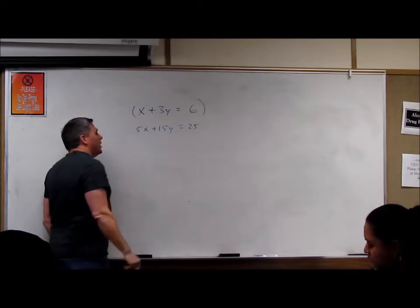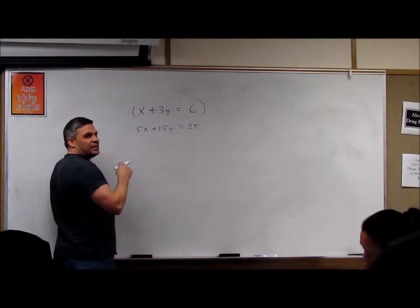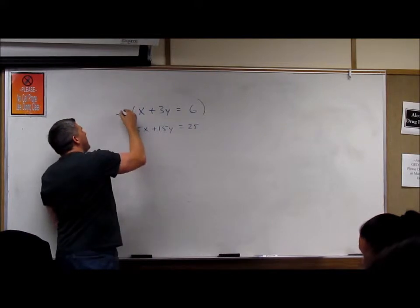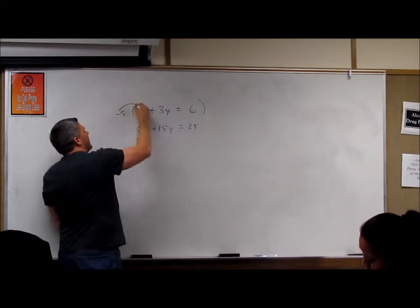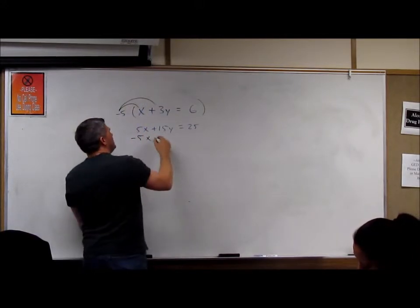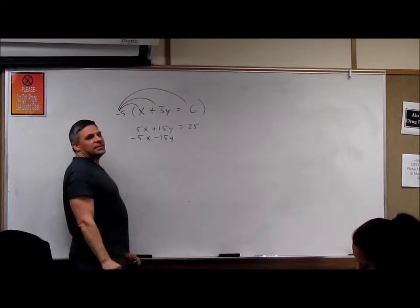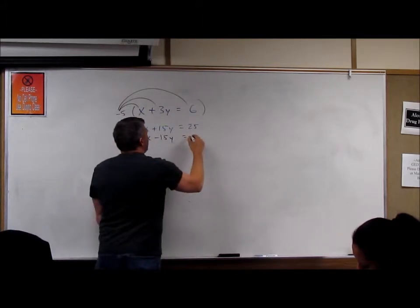So remember, we've got to make it opposite. So we've got to multiply it by negative 5. Negative 5 times x is negative 5x. Negative 5 times 3 is negative 15y. Negative 5 times 6 is negative 30.